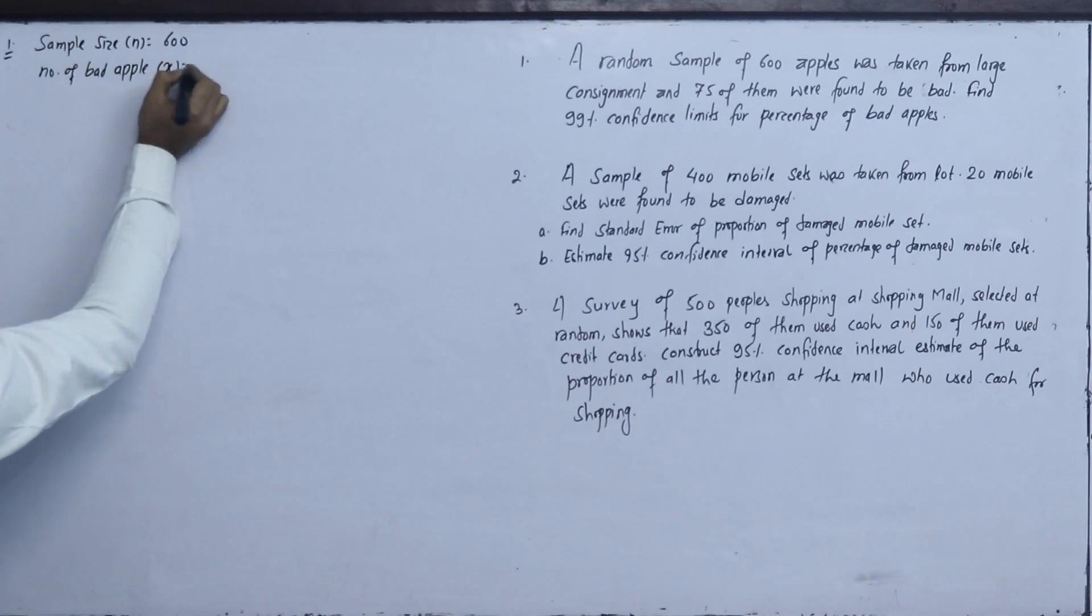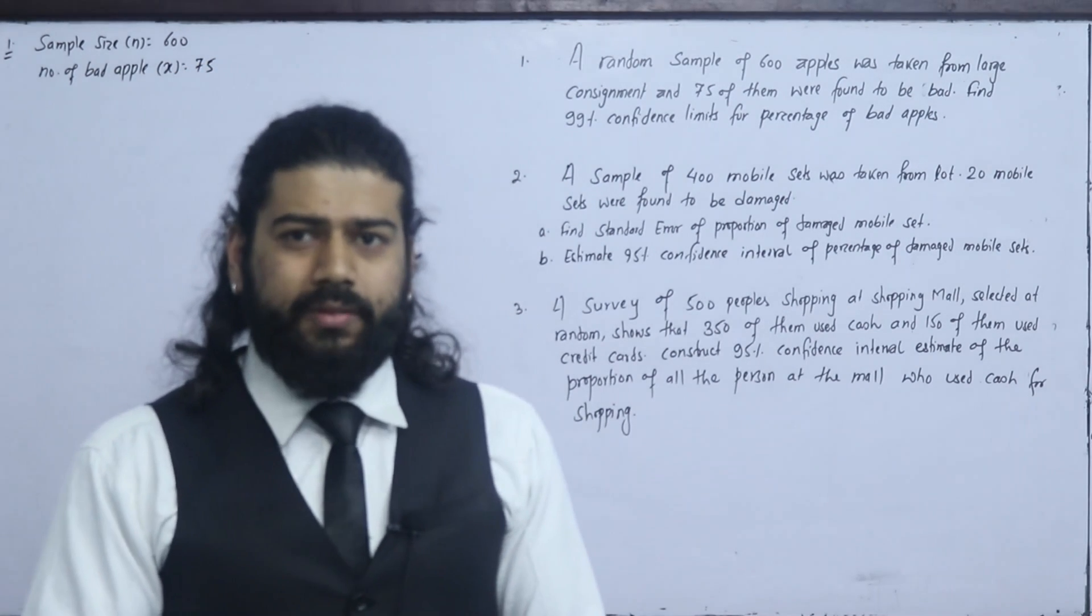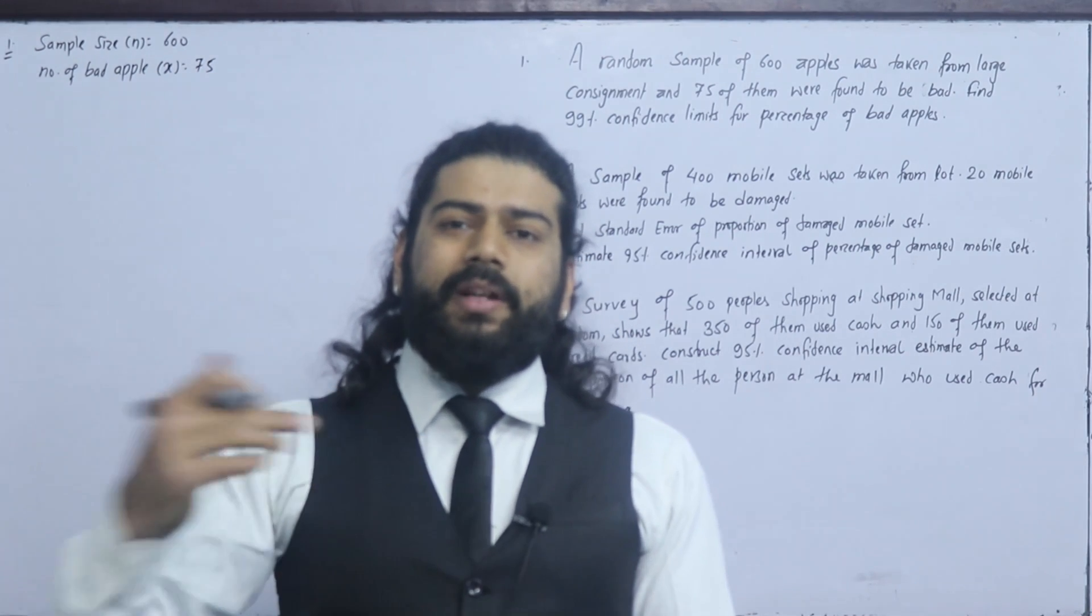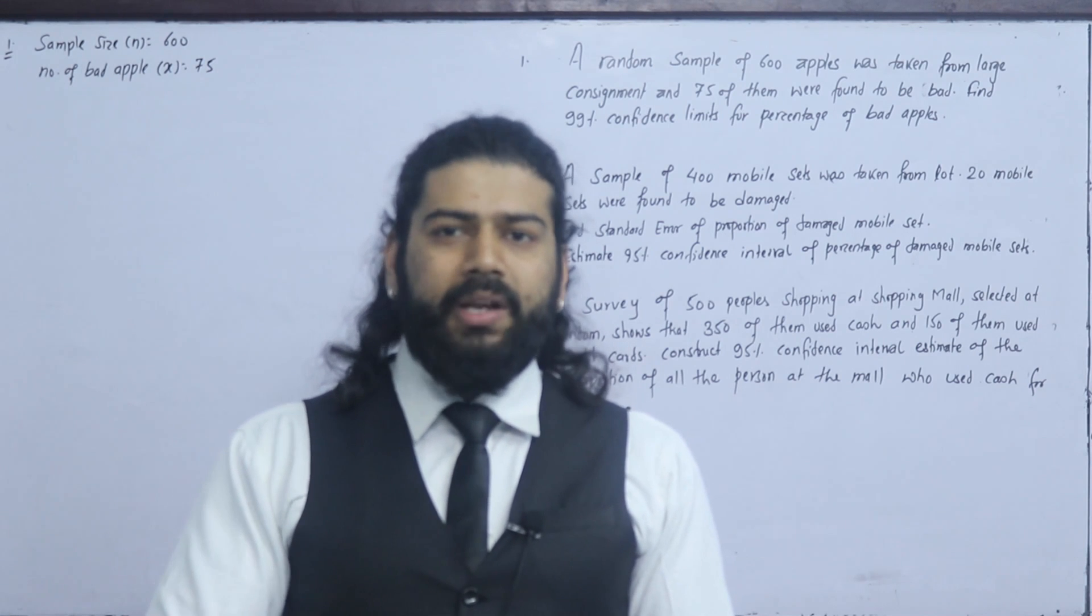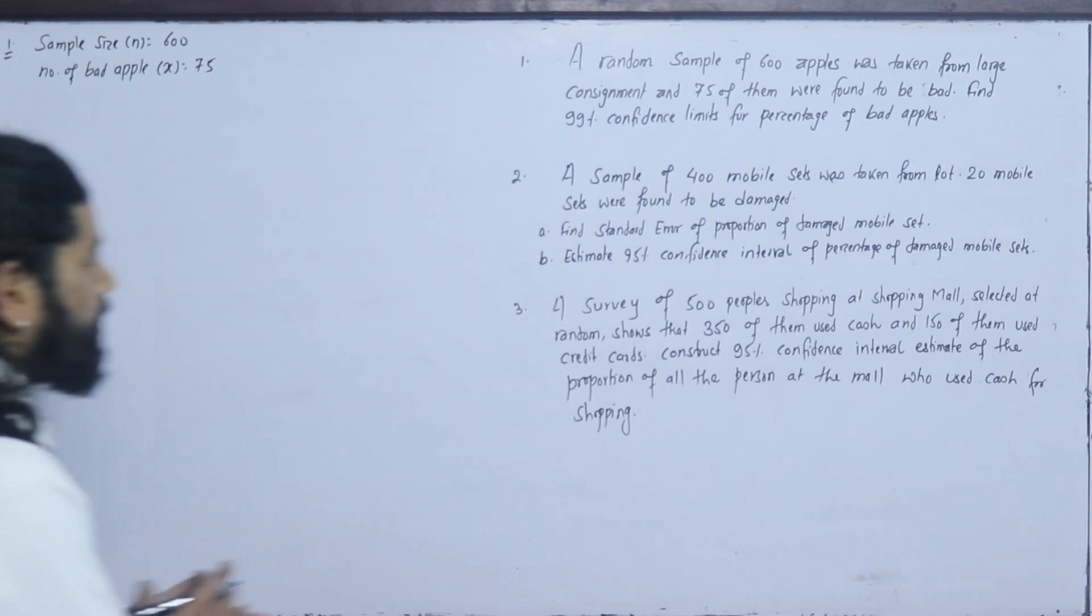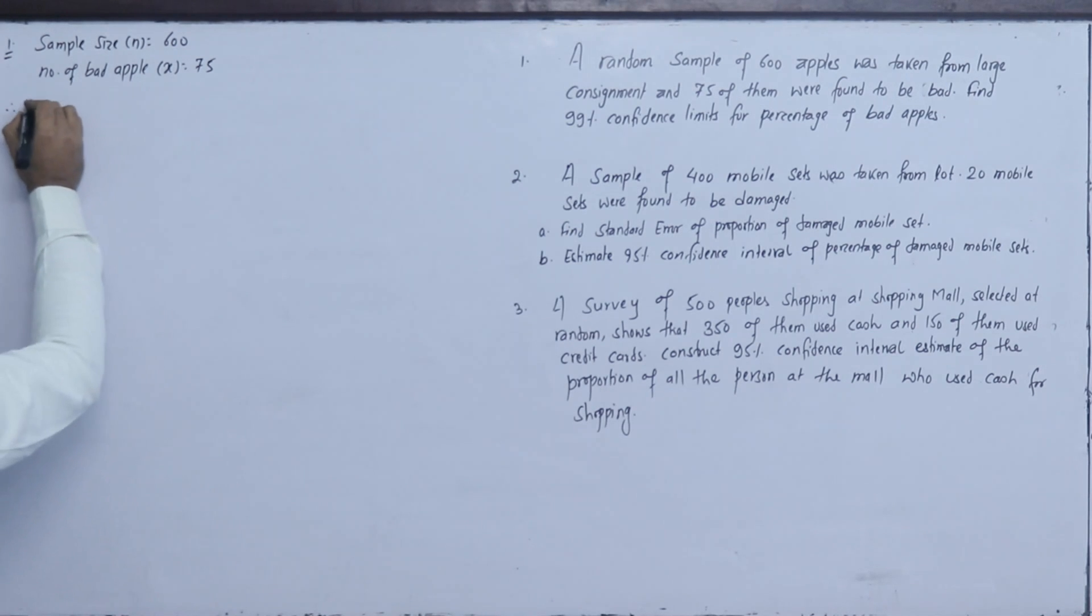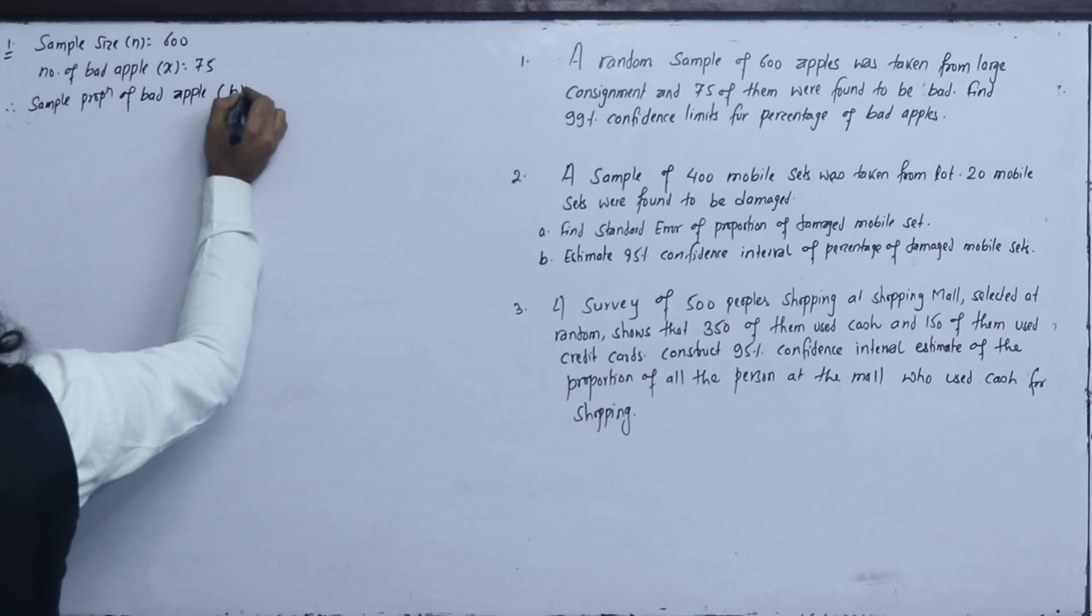The number of bad apples is x, it is 75. Now, the proportion - about mean, about standard deviation, we have to know it's not number of apples, it's proportion. Therefore, sample proportion of bad apples - when the apple is bad, we put small p for sample proportion, capital P for population proportion.